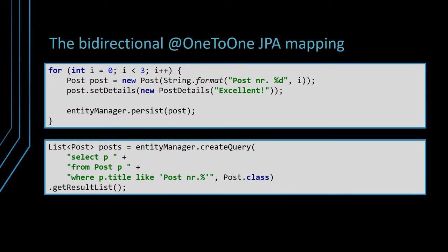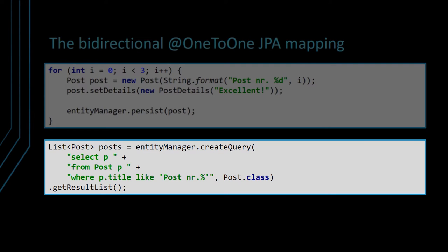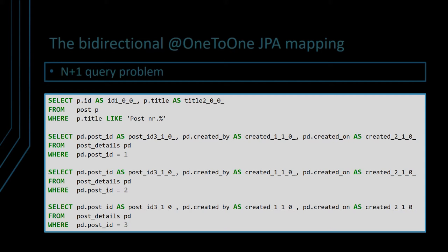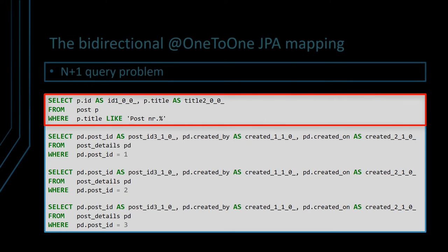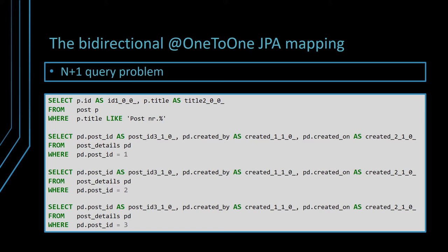Now, to visualize why fetching the child association eagerly can affect performance, consider that we have three post entities, each one with its own postDetails child entity. Let's try to execute an entity query that selects all post entities whose titles match a given pattern. When executing that entity query, Hibernate generates four SQL queries — the first one for the post entity, while the next three are for the associated postDetails. So the one-to-one association was fetched eagerly even if it was annotated with fetch type lazy. The more post entities are selected, the more extra postDetails queries are going to be executed as well. This is called the N+1 query problem, where N denotes the number of subsequent queries executed after the first query retrieved N results.